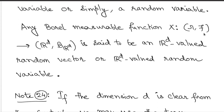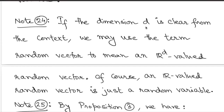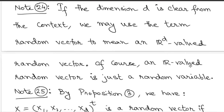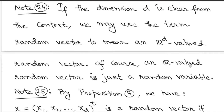If the dimension d is clear from the context, we may use the term 'random vector' instead of 'R^d valued random vector'. If you put dimension d equal to 1, that becomes a real valued random vector, which is nothing but a random variable. Structurally, random variables and random vectors are similar — random vectors take values in d-dimensional Euclidean spaces where d could be 1, 2, 3, or any positive integer. Random variables for all practical purposes are simply one-dimensional random vectors.